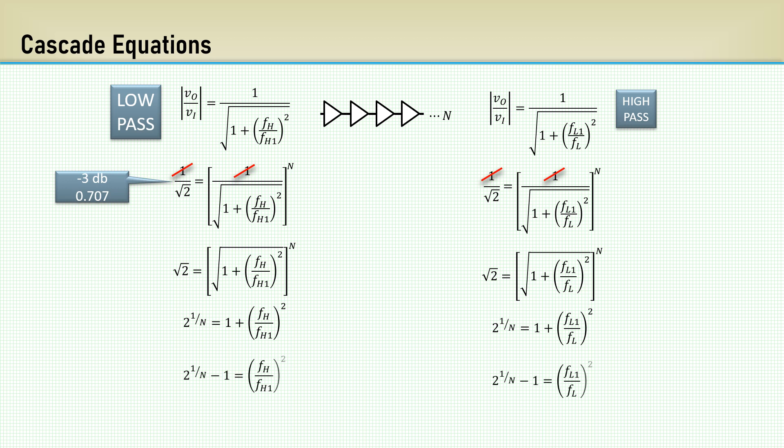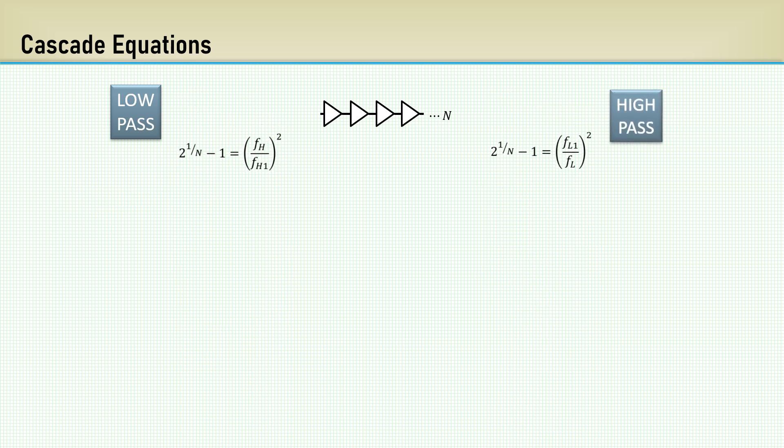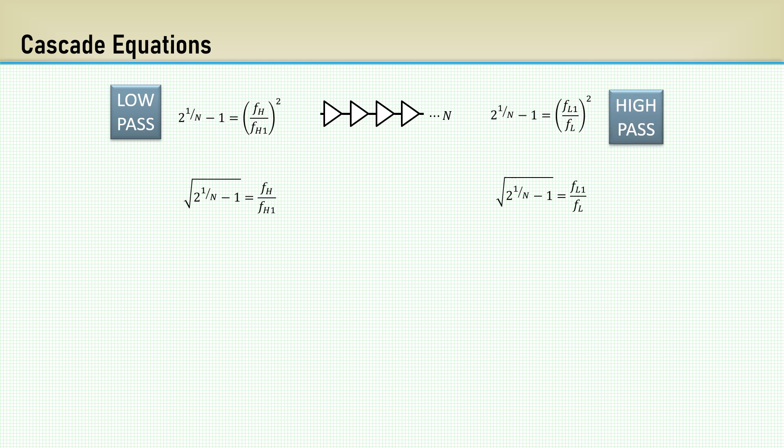Again, we want to solve for FH and FL. Taking the square root of both sides, then rearranging for FH and FL. With these simple equations, we can determine the upper and lower corner frequencies of a cascaded system with N number of amplifiers based on the upper and lower corner frequency of each identical individual stage, FL1 and FH1.